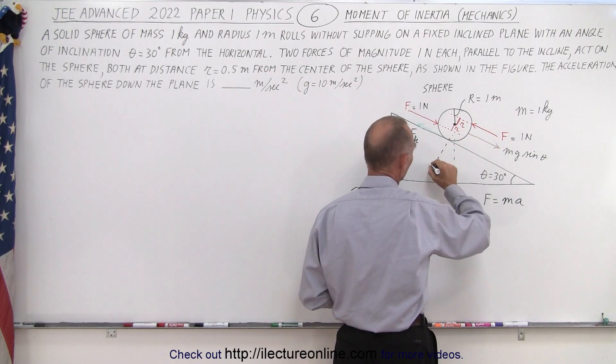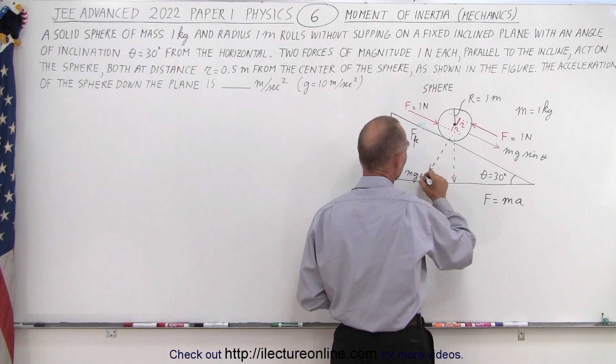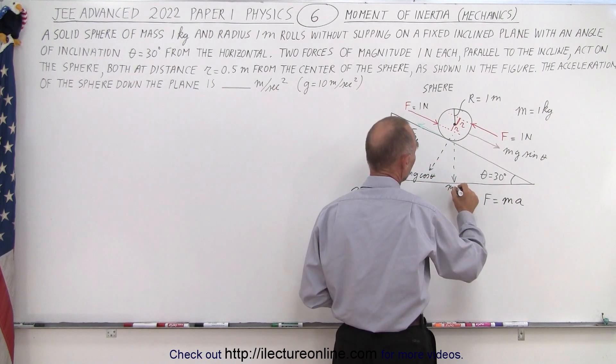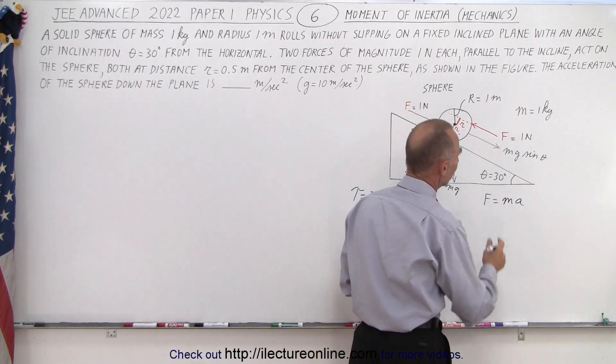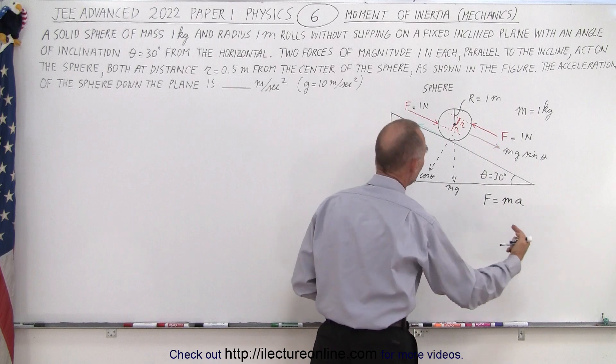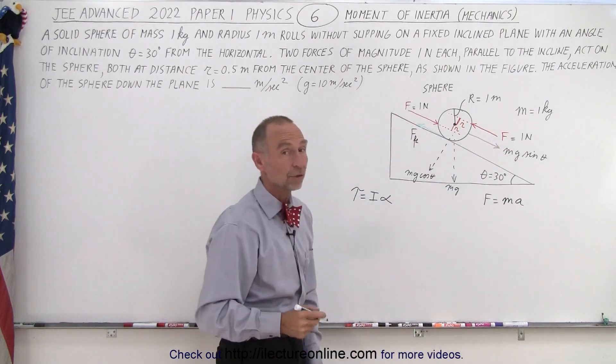We have the perpendicular component, which is mg cos theta. This one is mg. And there we have mg sine theta, which pushes the ball down. And now we have the friction force pushing in the opposite direction.